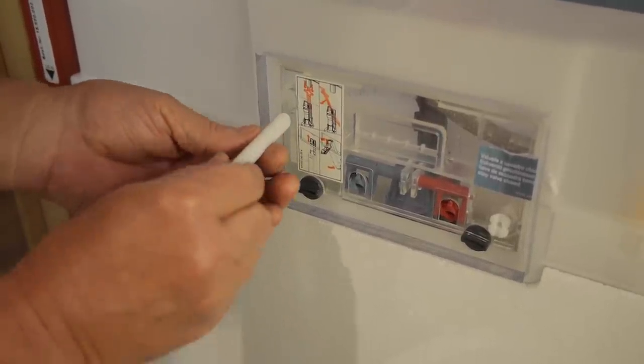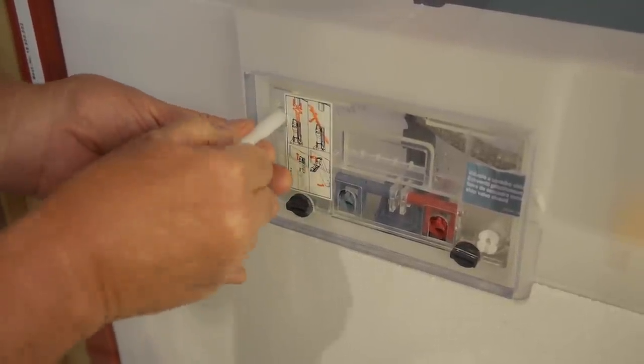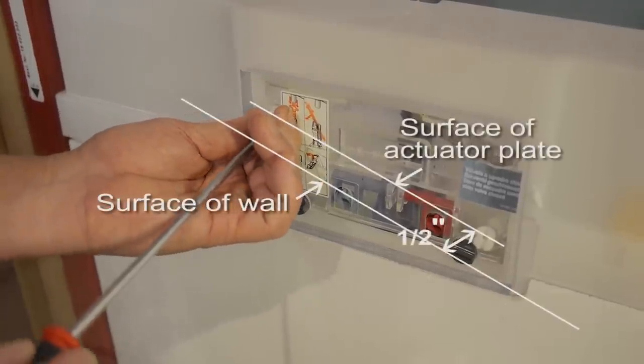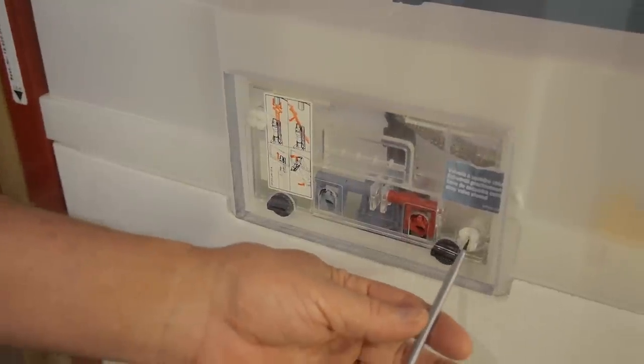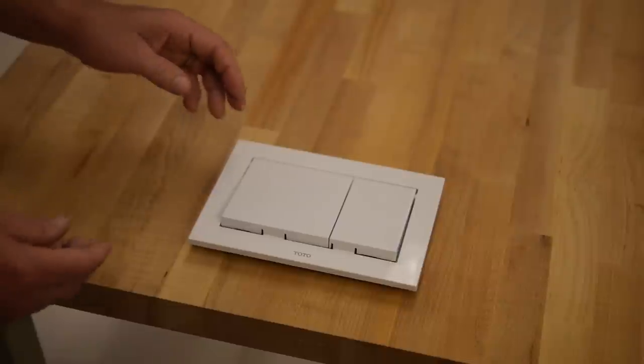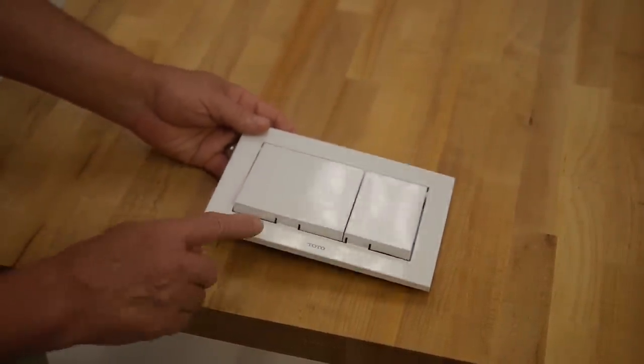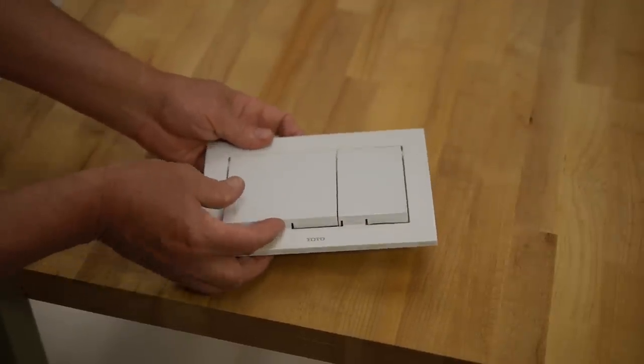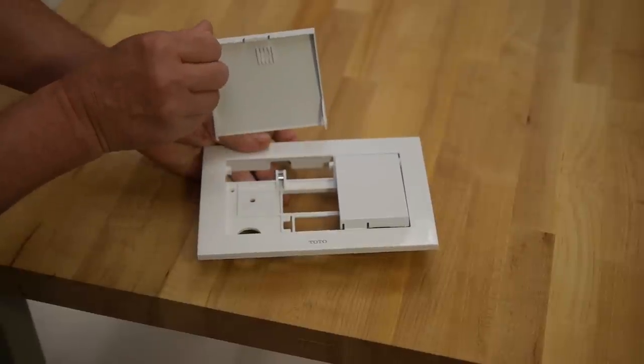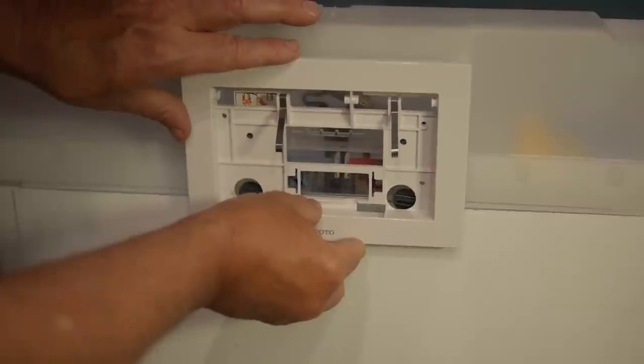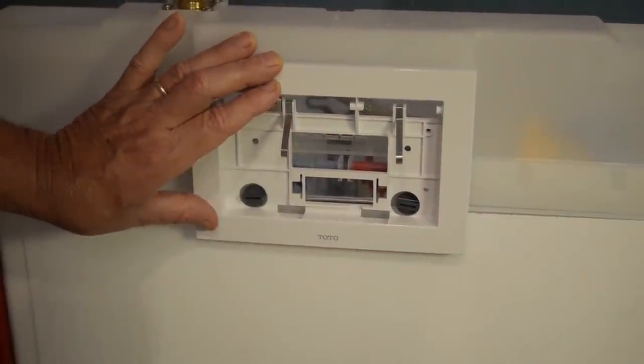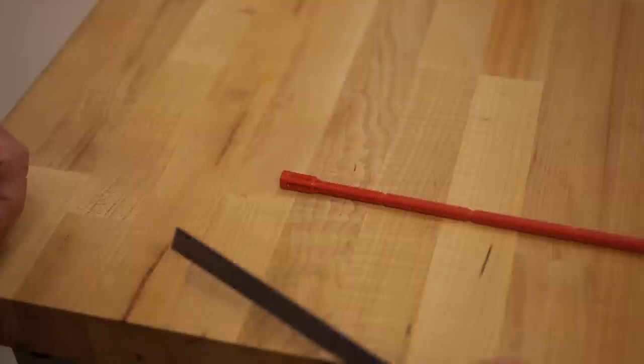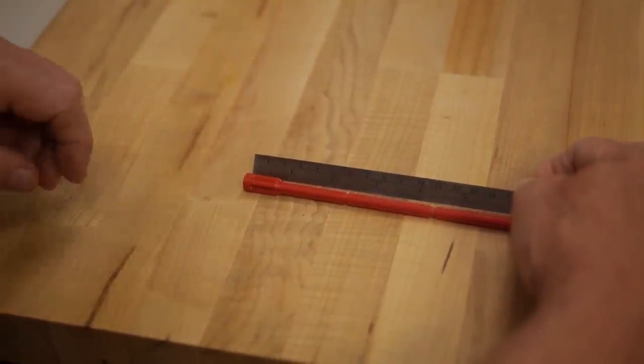To install the faceplate, remove the two square actuator buttons from the faceplate by pushing up on the keeper tabs at the bottom of each button and pushing the button forward. Use your finger to do this because a tool can damage the plastic plate. Now hold the faceplate in place and measure from the face of the actuator plate to the face of the push plate and add two inches. Use this distance to measure from the squared end of the red and blue push rods and cut to length.